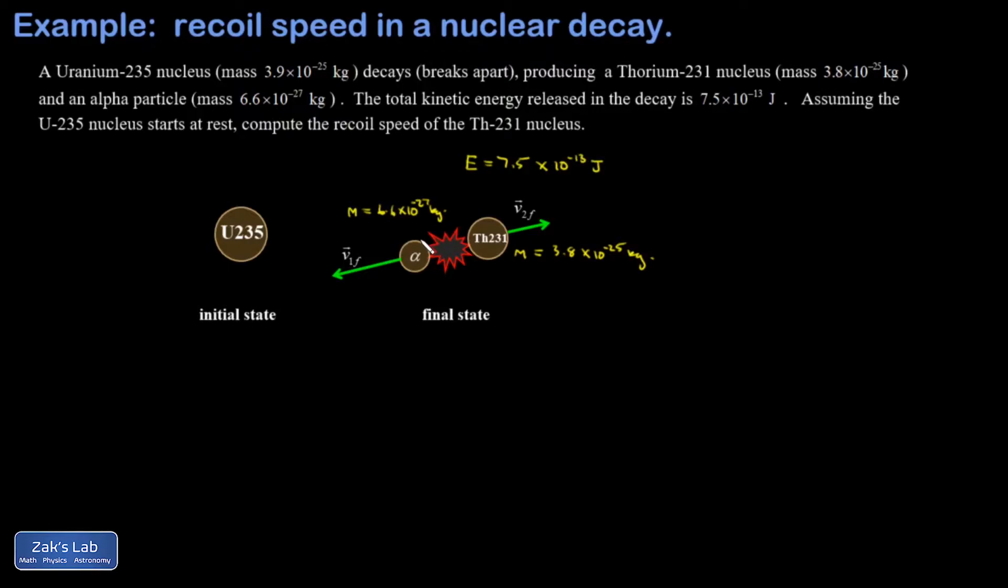Our strategy to find the recoil speed of the thorium nucleus is to use conservation of momentum. In my initial state, p-initial is equal to 0. In the final state, my net momentum must still be equal to 0.